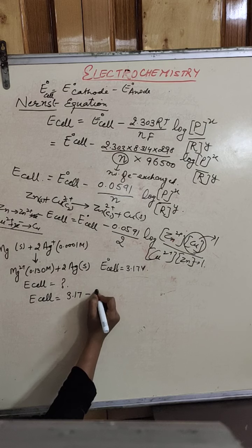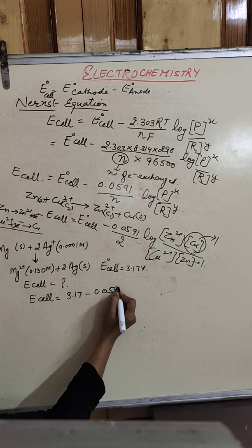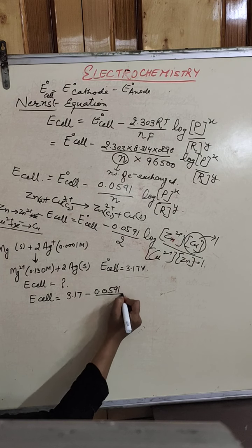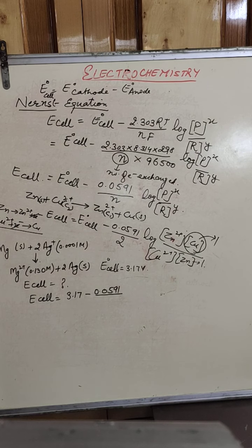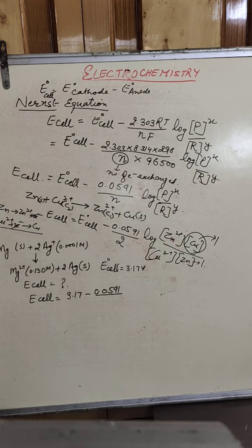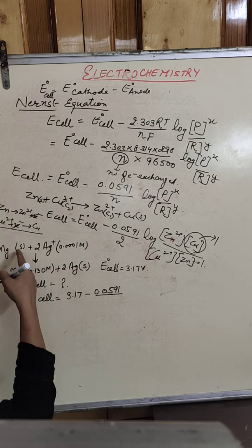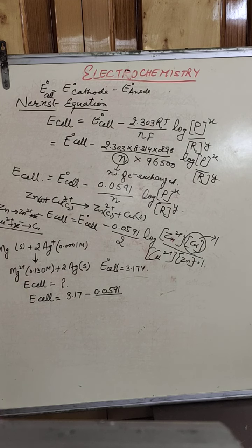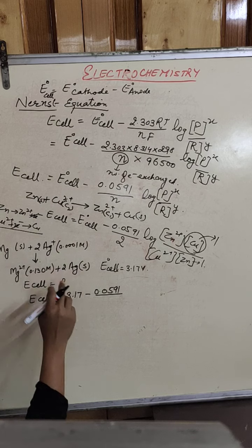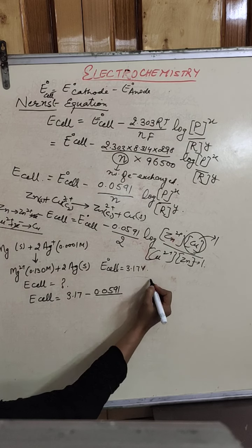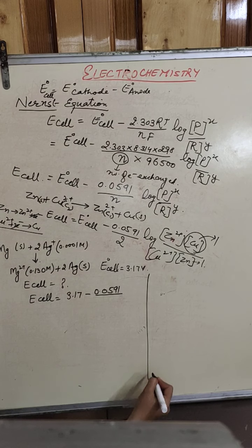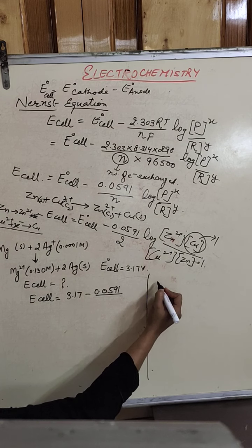Substituting values into the Nernst equation: E0 cell is 3.17 volts, minus 0.0591 upon N. To find N: silver ion gains 1 electron, and magnesium loses 2 electrons. When we balance the equation, we multiply the silver half-reaction by 2, so the exchange of electrons comes out to be 2. Therefore N equals 2.